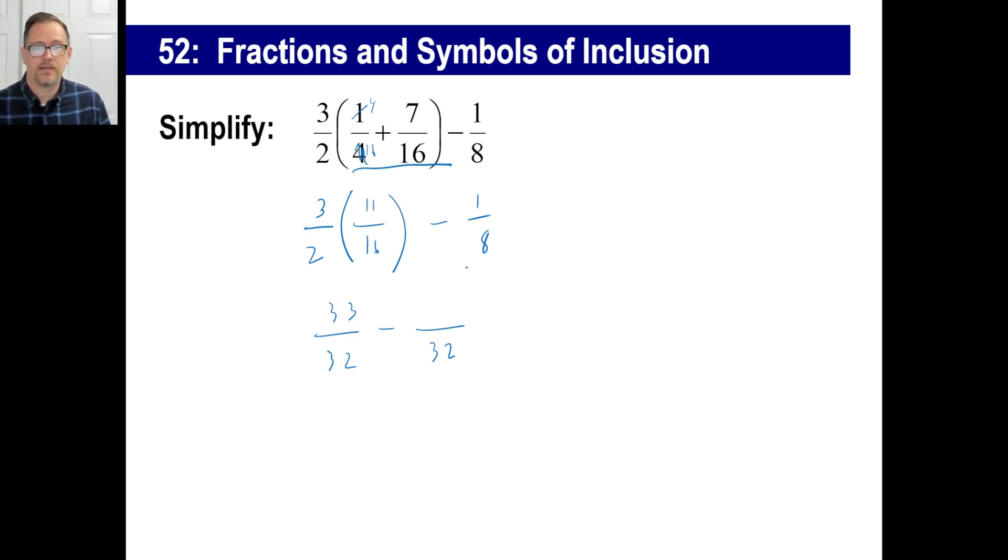Okay, anyway, yeah. Okay, one-eighth as a thirty-second will be four, right? So I have thirty-three over thirty-two. Minus four over thirty-two is twenty-nine over thirty-two.